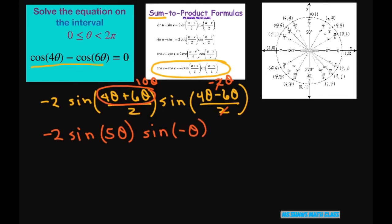Now sine is an odd function, so I can move this out, put the negative in front. So basically I have positive 2 sine of 5θ times sine of θ equals 0. This should all equal 0 here.